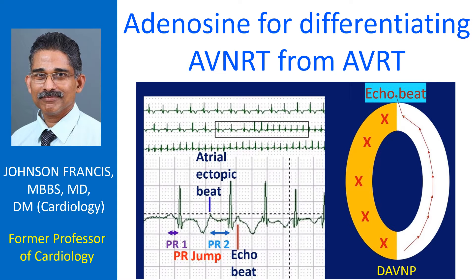Adenosine is used to terminate atrioventricular node dependent arrhythmias like AV nodal reentrant tachycardia (AVNRT) and atrioventricular reentrant tachycardia (AVRT). It is also useful in the treatment of other forms of tachycardias sometimes. Use of adenosine in tachycardias could be for diagnosis of the mechanism as well.